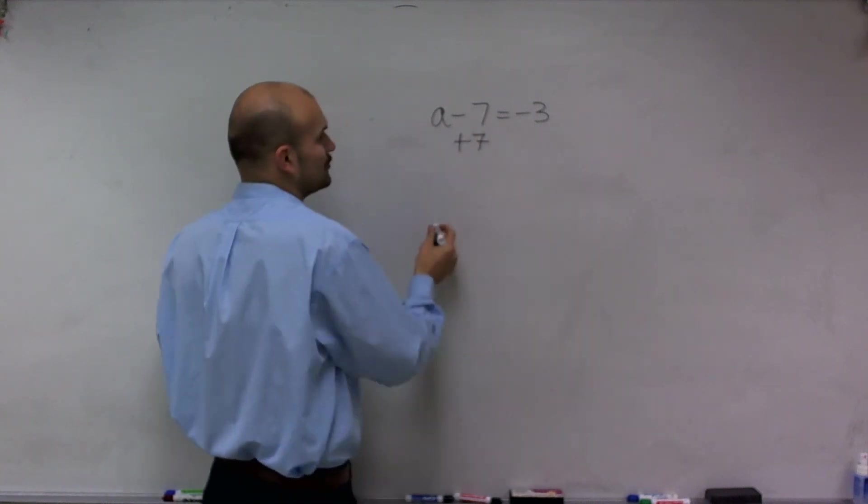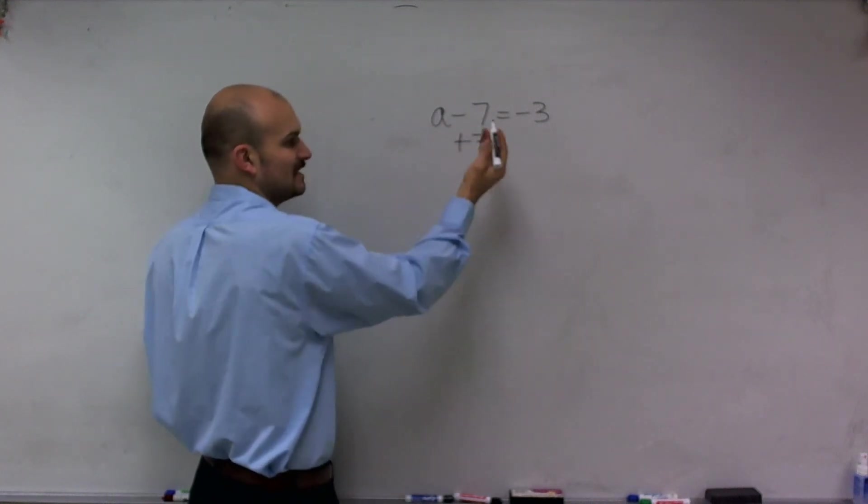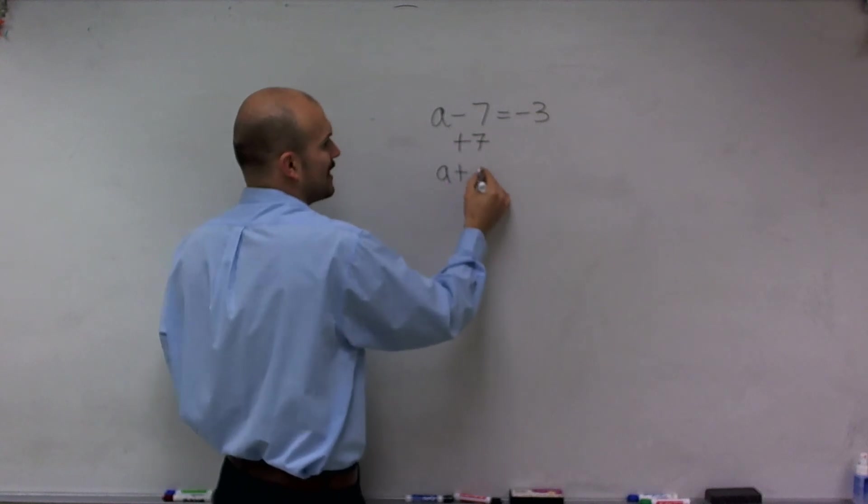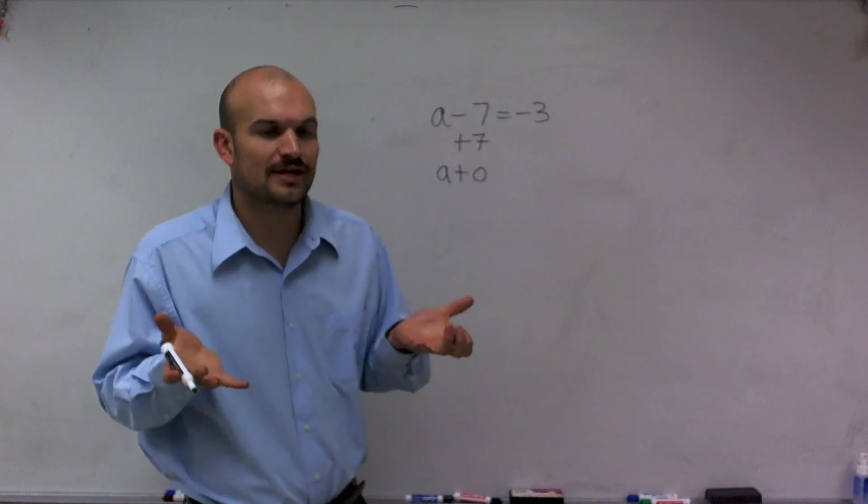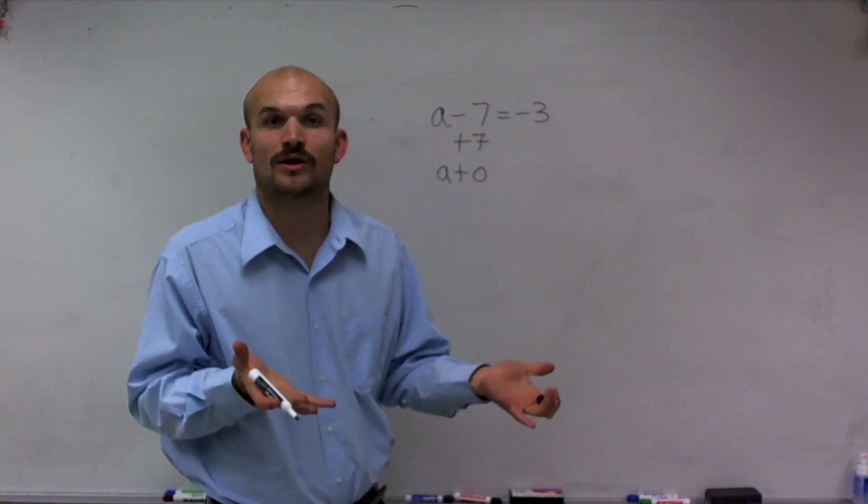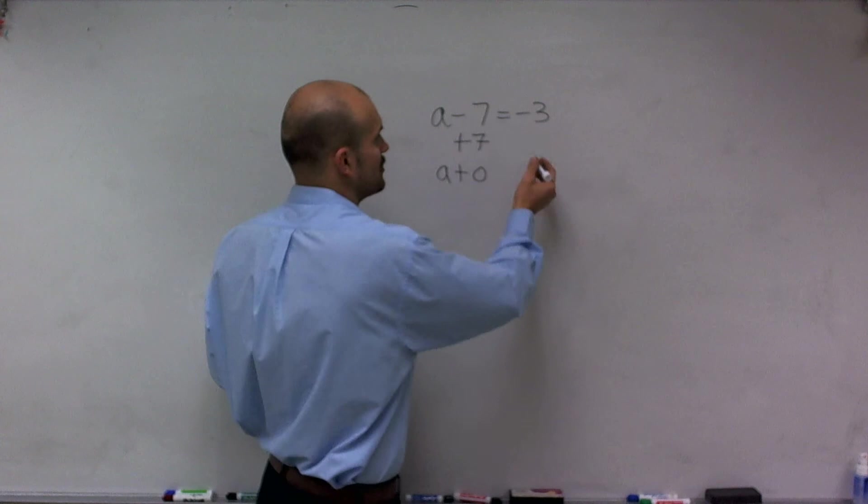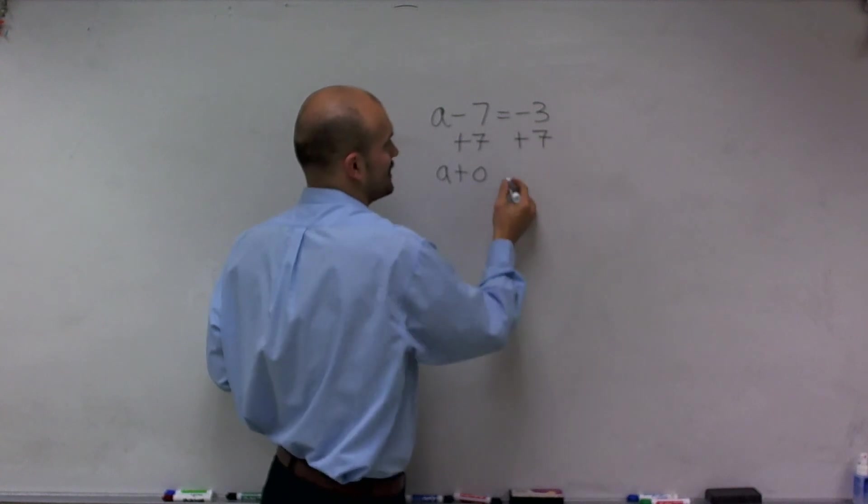So by adding 7, you'll notice that negative 7 plus 7 is going to give you 0. So now I'm going to have a plus 0 on my left side. But with an equation, it's important that an equation is a statement of equality, meaning the left side has to equal the right side. So I'm going to have to make sure I add 7 to the right side.